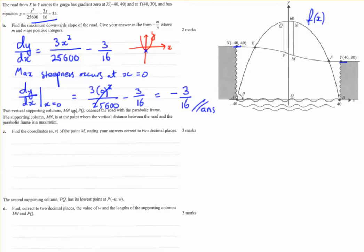In part C, we're talking about the two vertical columns here, M to N and E to Q. And we need to find the coordinates of M. So we're interested in these coordinates to two decimal places. But given one extra bit of information, we know that this point M occurs when we have the maximum distance, the maximum vertical distance between the parabolic support and the road. So to work this out, we need to make a function for the distance between these two points.